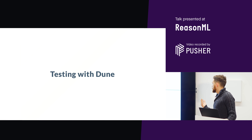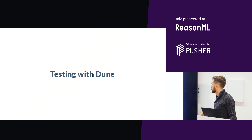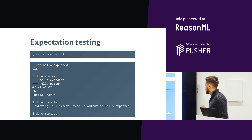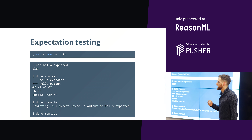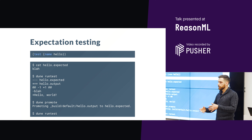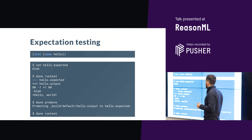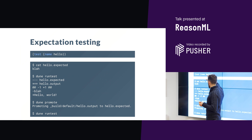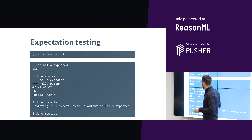Testing is obviously a very important part of software development. Because we want a good user experience with Dune, we spent quite a lot of time thinking about how to have a good testing strategy. In particular, one thing we've put a lot of focus on is expectation testing — the idea that you capture what your test produces and save it as an expectation. Here I have a binary called 'hello' that's supposed to print 'hello world', and I save in a file what I expect the test to print.